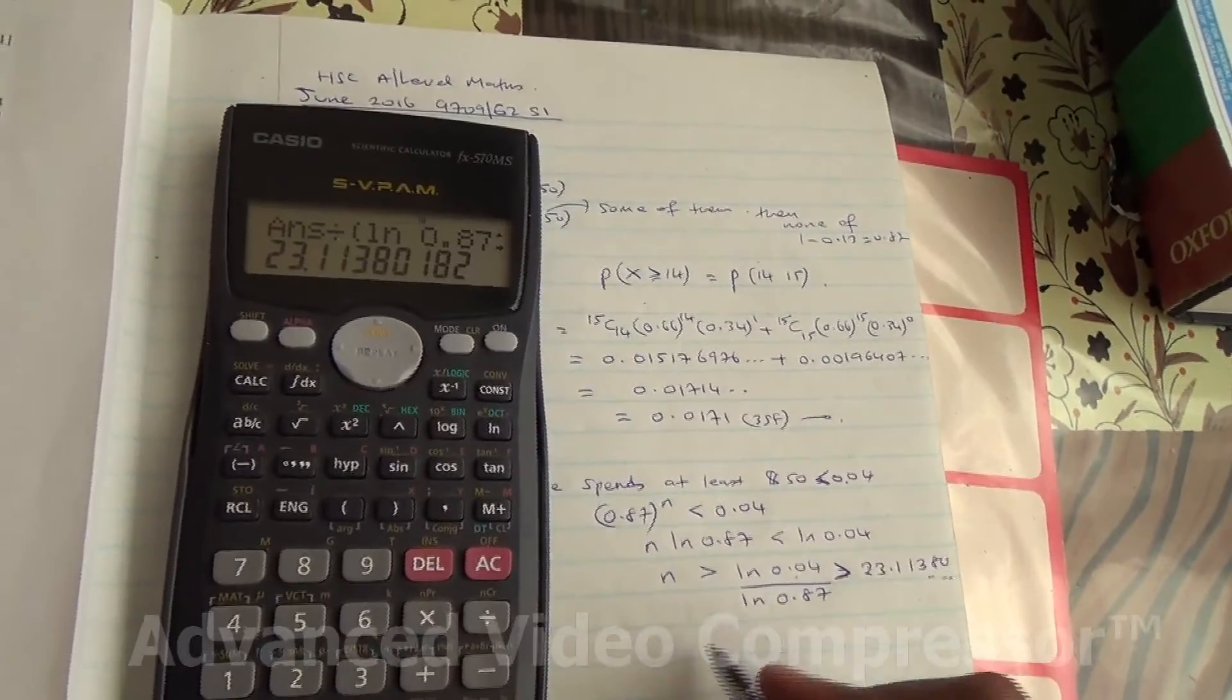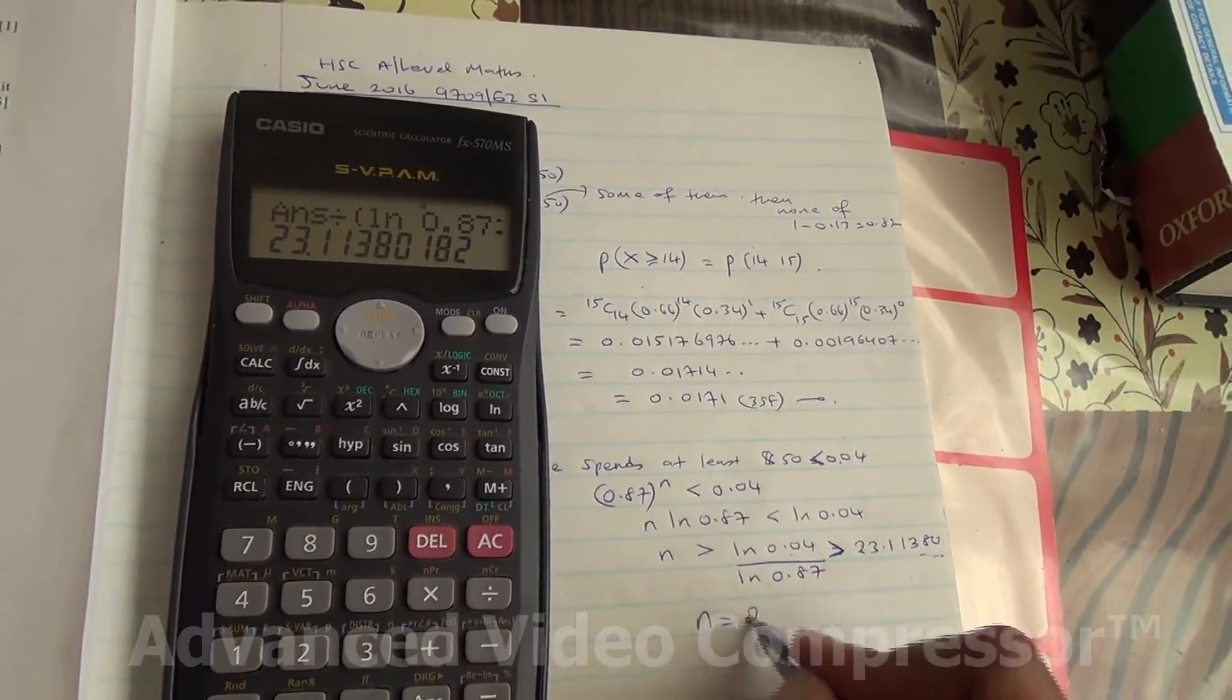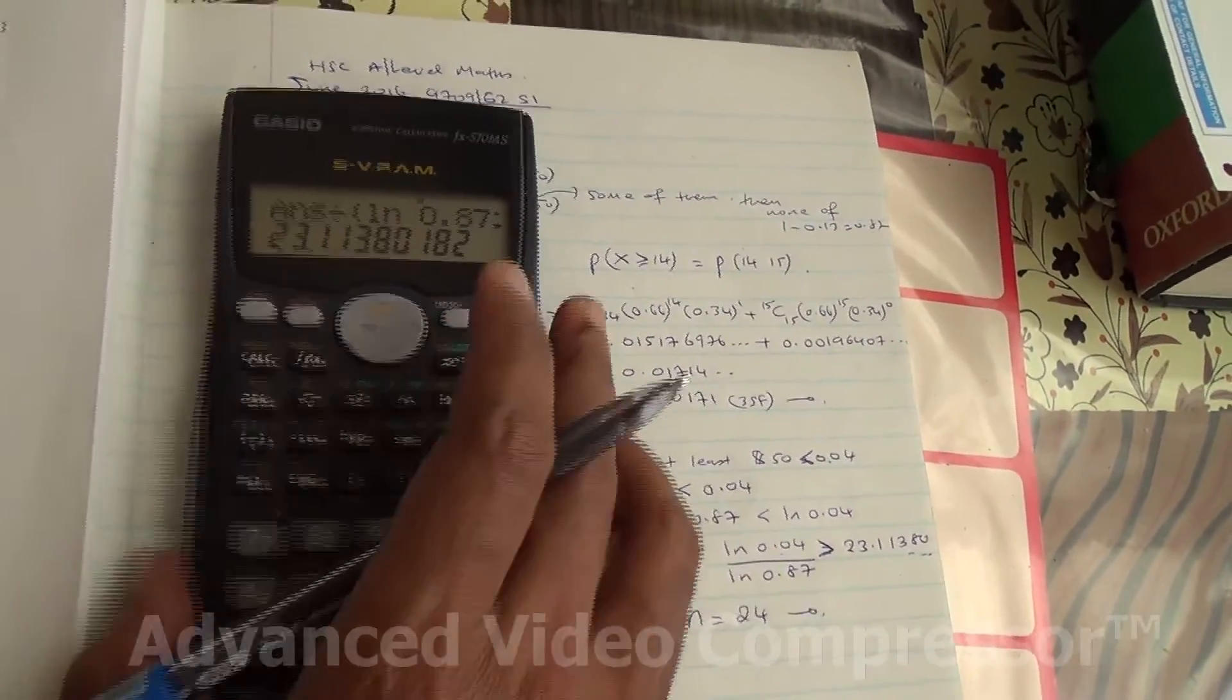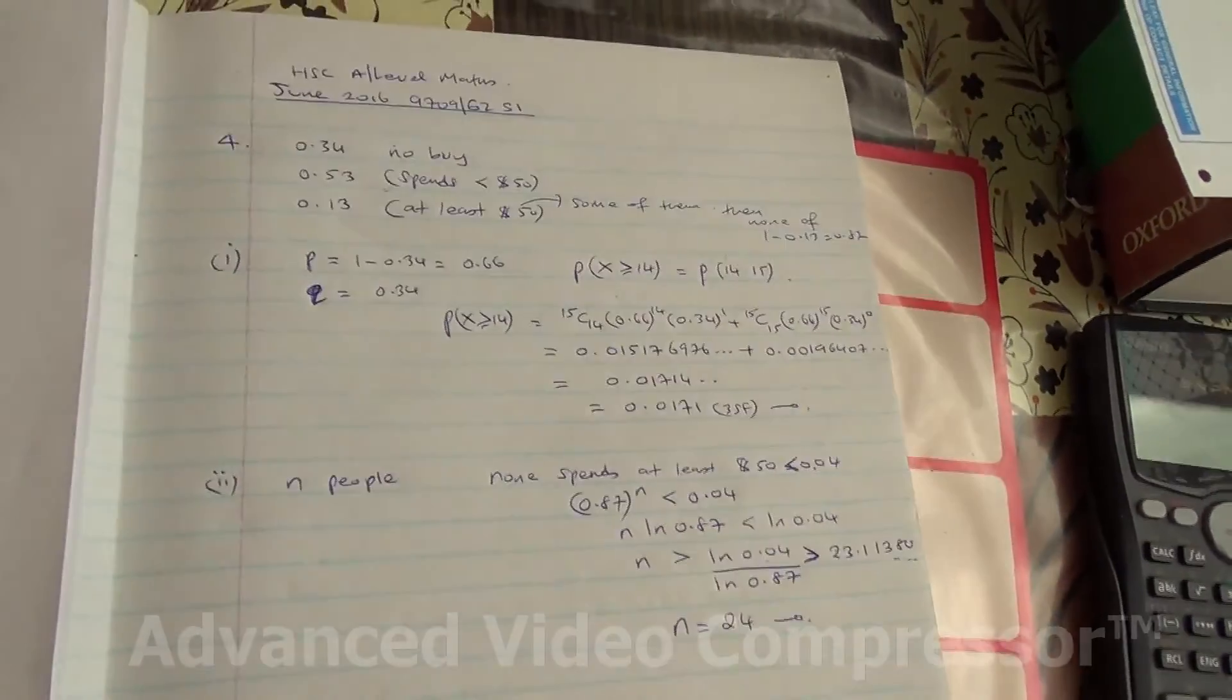Therefore, the least value of N is going to be, just after 23, is going to be 24. So, here we are for this question, the answer is going to be 24.